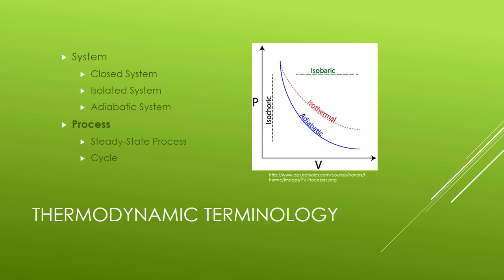An isobaric process is one where the pressure is held constant. In an isothermal process, temperature is held constant. In an isochoric process, volume is held constant. And again, we have the adiabatic process, where there's no heat transferred in or out.